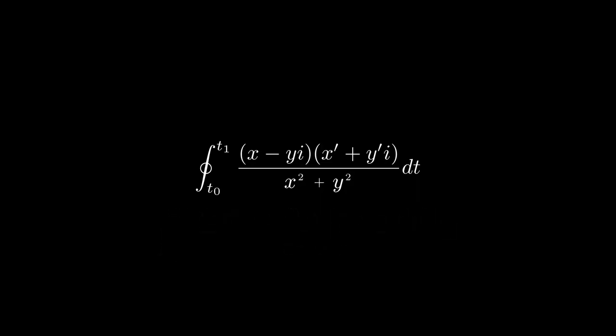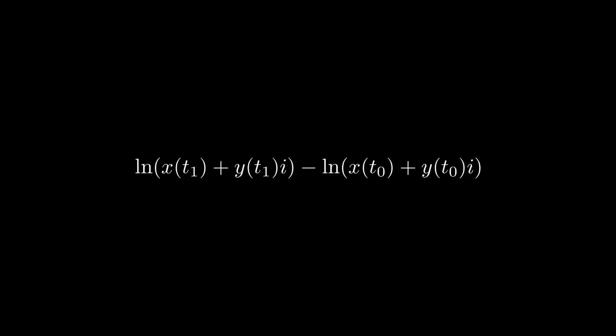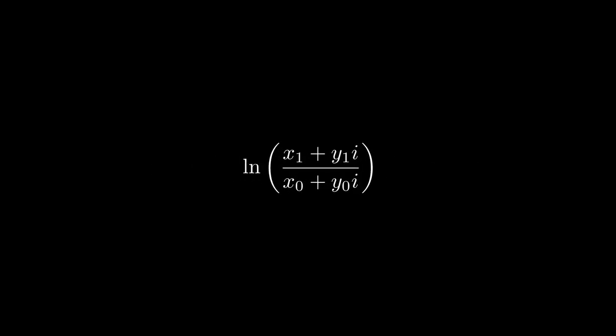The denominator could be factored into this. Then the x minus yi's cancelled, and I was left with x plus yi prime over x plus yi. This could be rewritten as the t derivative of ln of x plus yi. Now the integral could cancel with the t derivative, resulting in this. The x plus yi's could be rewritten in polar form. After some more simplifying, I got this.